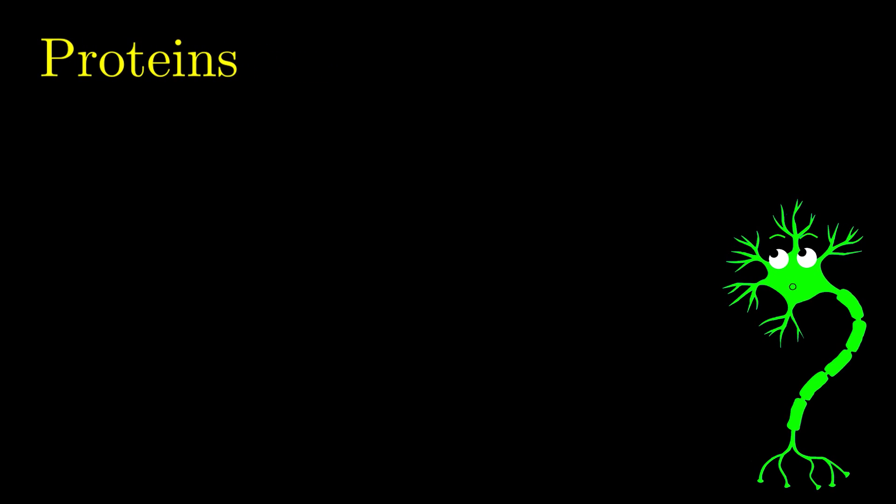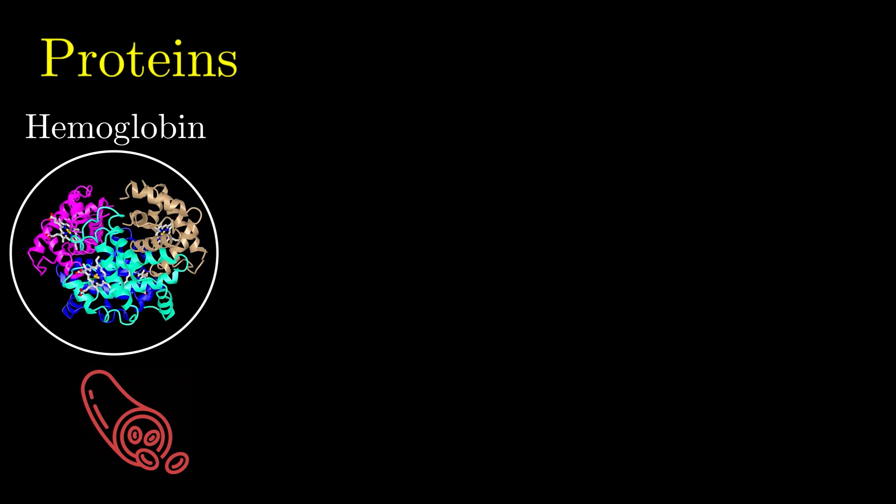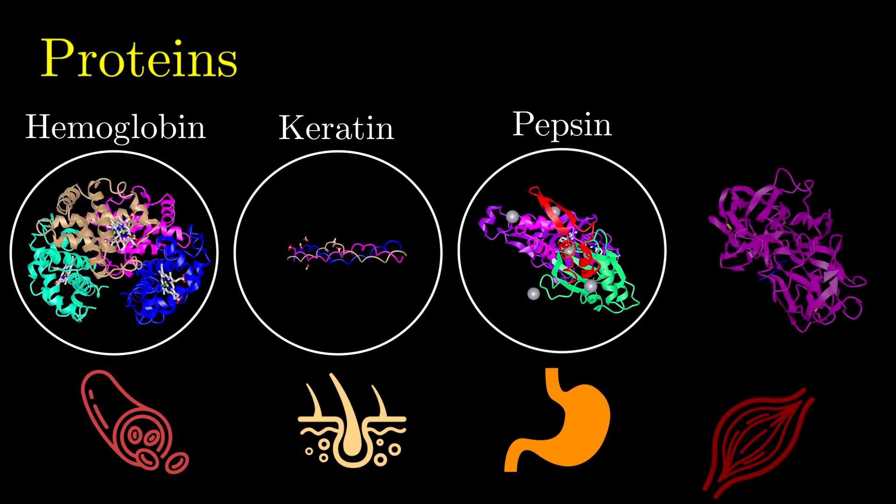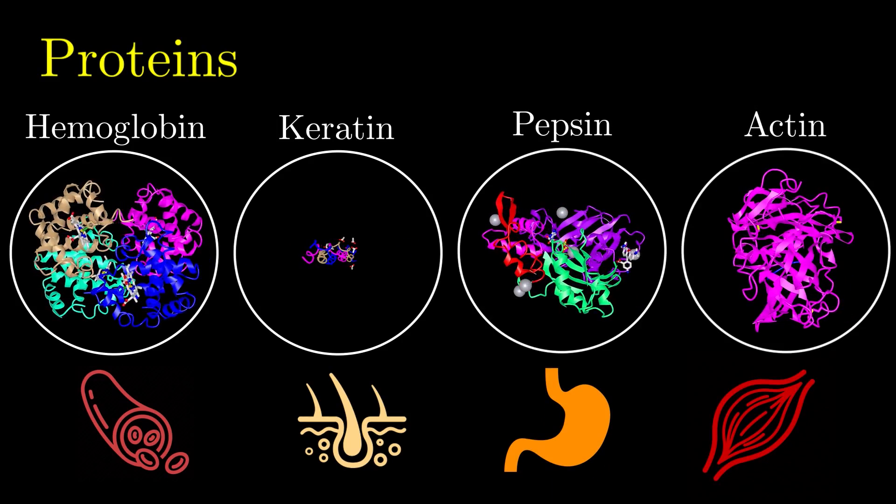Out of everything in your body, proteins are the most important in allowing life to function. Think about it. Almost everything you do is in some way because of proteins. Proteins help carry oxygen around your blood. They form the protective layer of your skin. They digest the food in your stomach. They make your muscles contract. The list goes on and on.